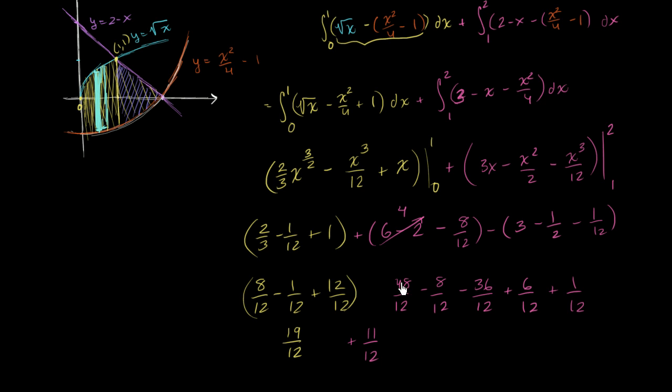Let me make sure I did that right. 48 minus 8 is 40. Minus 36 is 4. So that looks right. And then we're ready to add these two. 19 plus 11 is equal to 30 over 12. Or if we want to simplify this a little bit, we can divide the numerator and the denominator by 6. This is equal to 5 halves, or 2 and 1 half. And we're done. We figured out the area of this entire region. It is 2 and 1 half.